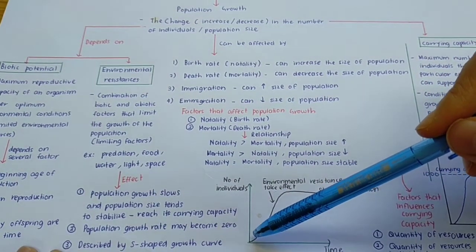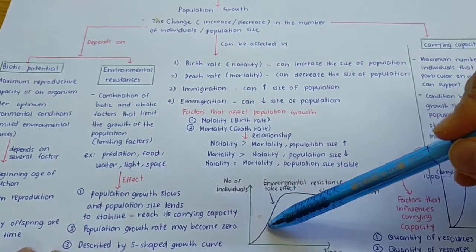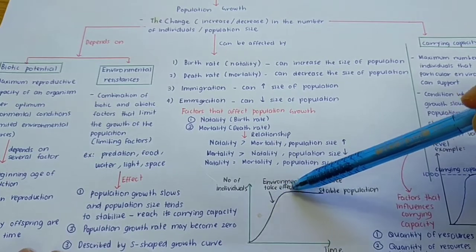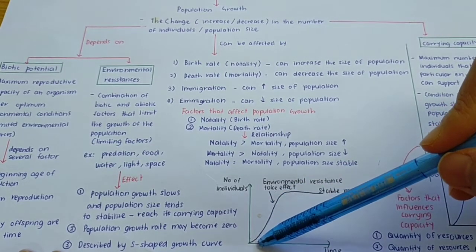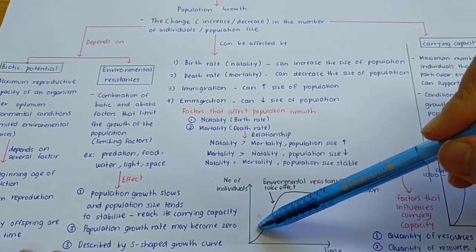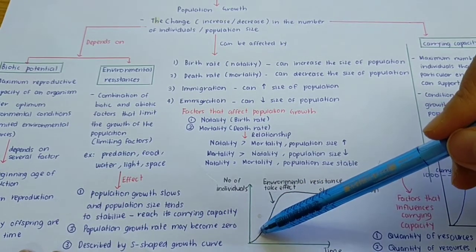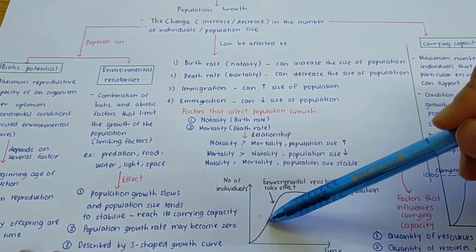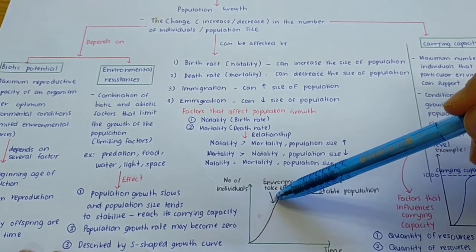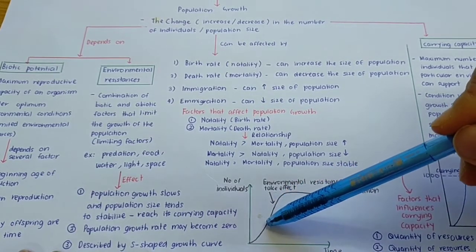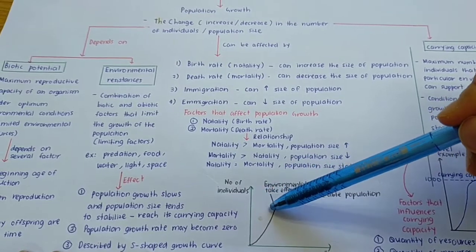Looking at the S-shaped or sigmoid growth curve, the first phase is the lag phase, followed by the exponential phase, then the decelerating phase, and finally the stationary phase. In the lag phase, the growth rate is low because the organism is still adapting to the new environment. In the exponential phase, the growth rate is rapid because the resources are unlimited. In the decelerating phase, the growth rate starts to slow down because environmental resistance begins to take effect.